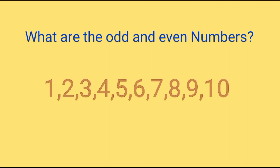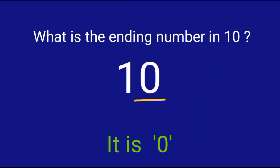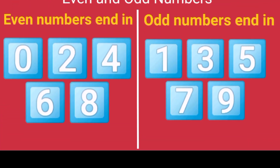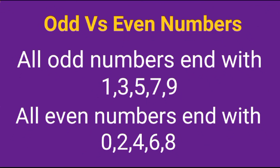Finally, what are the odd and even numbers between one to ten? Look at this table — you can read the odd and even numbers here. The odd numbers are 1, 3, 5, 7 and 9. The even numbers are 2, 4, 6, 8 and 10. The even numbers end in 0, 2, 4, 6, or 8, and the odd numbers end with 1, 3, 5, 7, or 9.